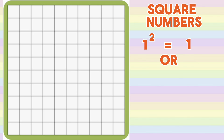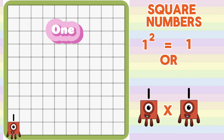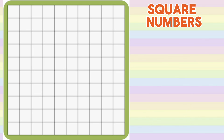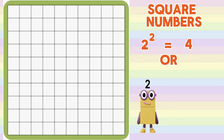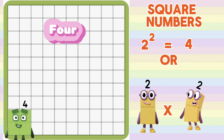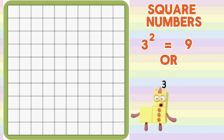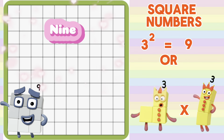1 squared is equals to 1, or 1 multiplied by 1 is equals to 1. 2 squared is equals to 4, or 2 multiplied by 2 is equals to 4. 3 squared is equals to 9, or 3 multiplied by 3 is equals to 9.